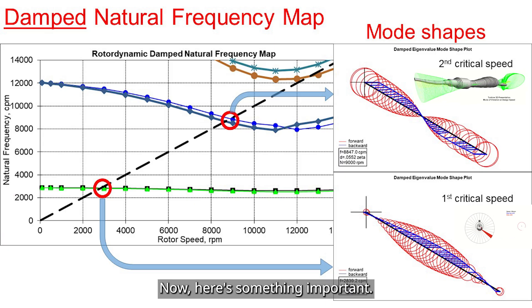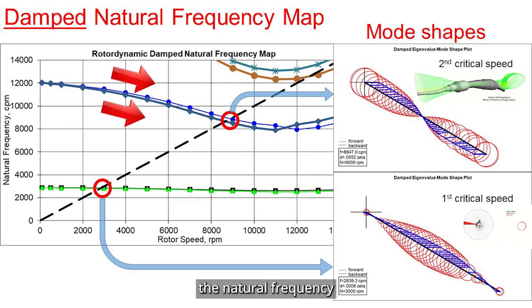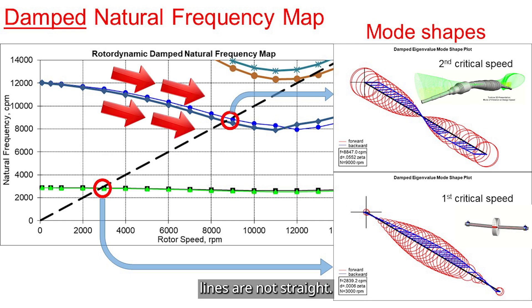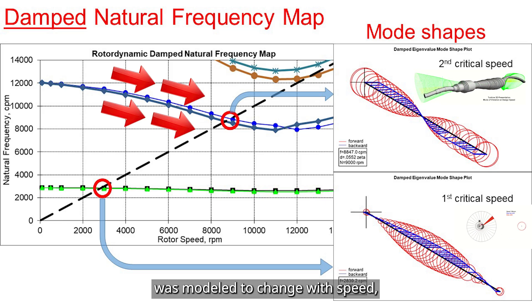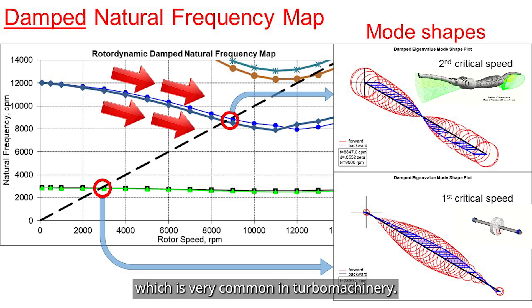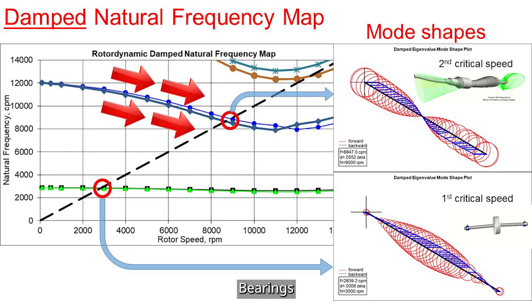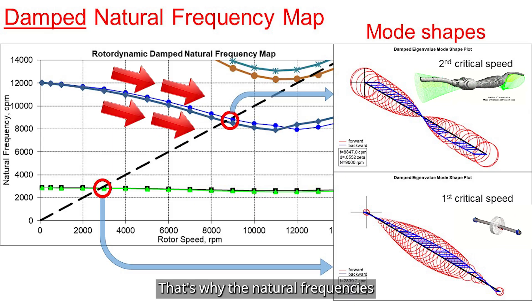Here's something important. You'll notice the natural frequency lines are not straight. That's because in this case, the bearing stiffness was modeled to change with speed, which is very common in turbo machinery. Bearings, especially fluid film types, have frequency-dependent stiffness and damping. That's why the natural frequency shifts as the rotor speed increases.